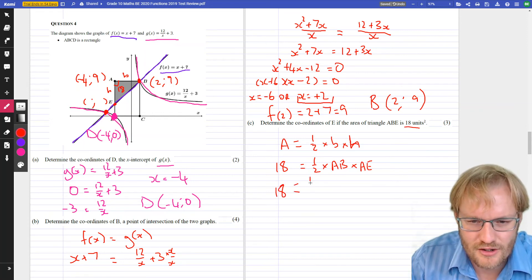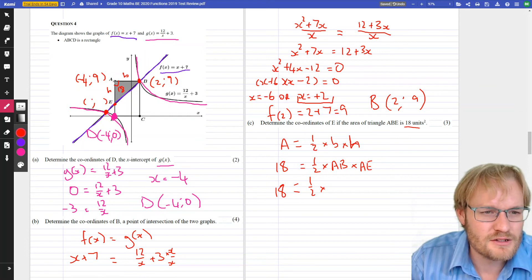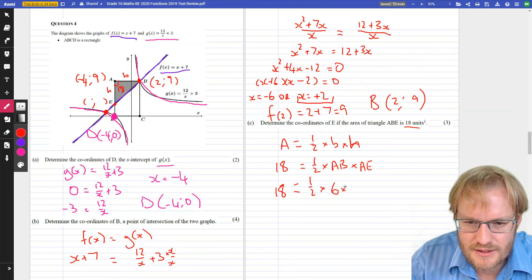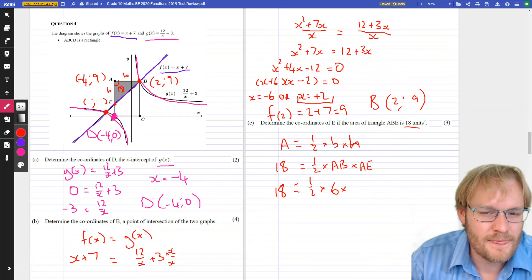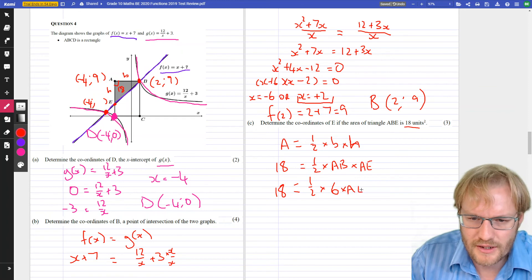18. Half. AB. Well, AB is distance from there to there, so we're going from minus 4 to 2. So, that's 4, that's another 2, so we've gone 6. So, that must be 6. And AE, well, that distance, we don't know, because we definitely don't know this Y value. We do know the X value, though, because it must also be negative 4. So, this is going to be AE. We don't know what that distance is.